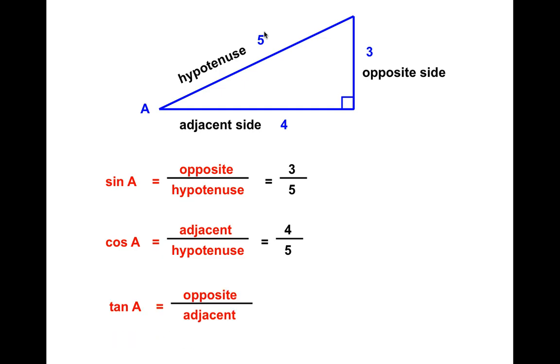And tangent is opposite over adjacent. So the opposite is 3, the adjacent is 4. So the tangent of A is 3 fourths.